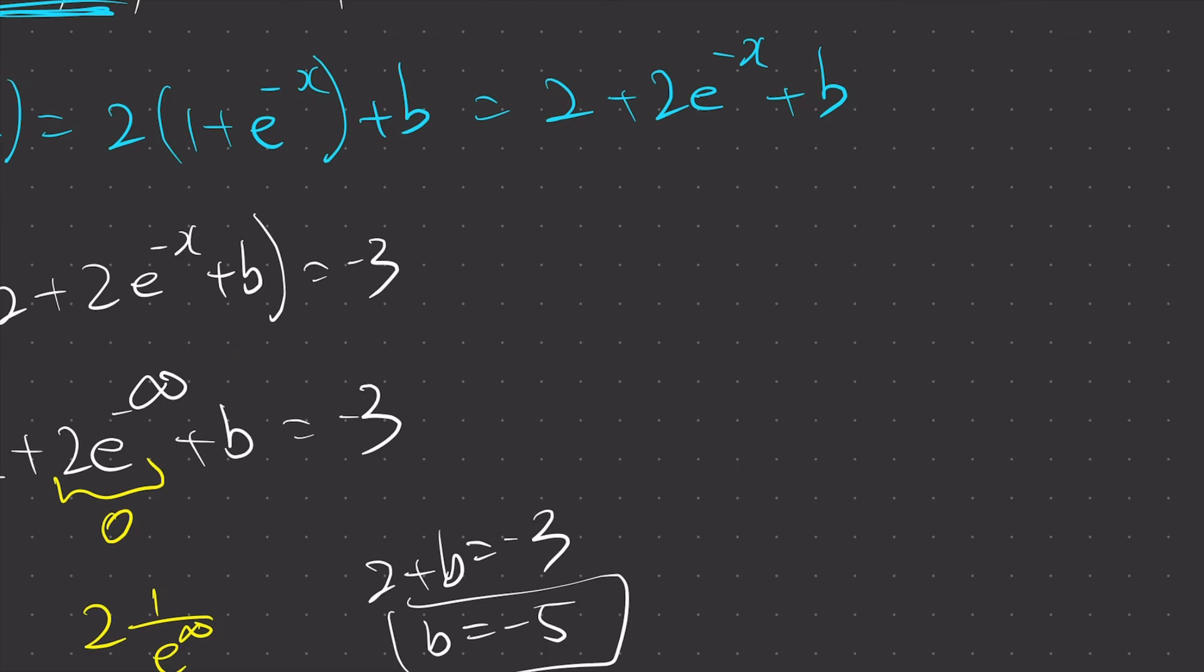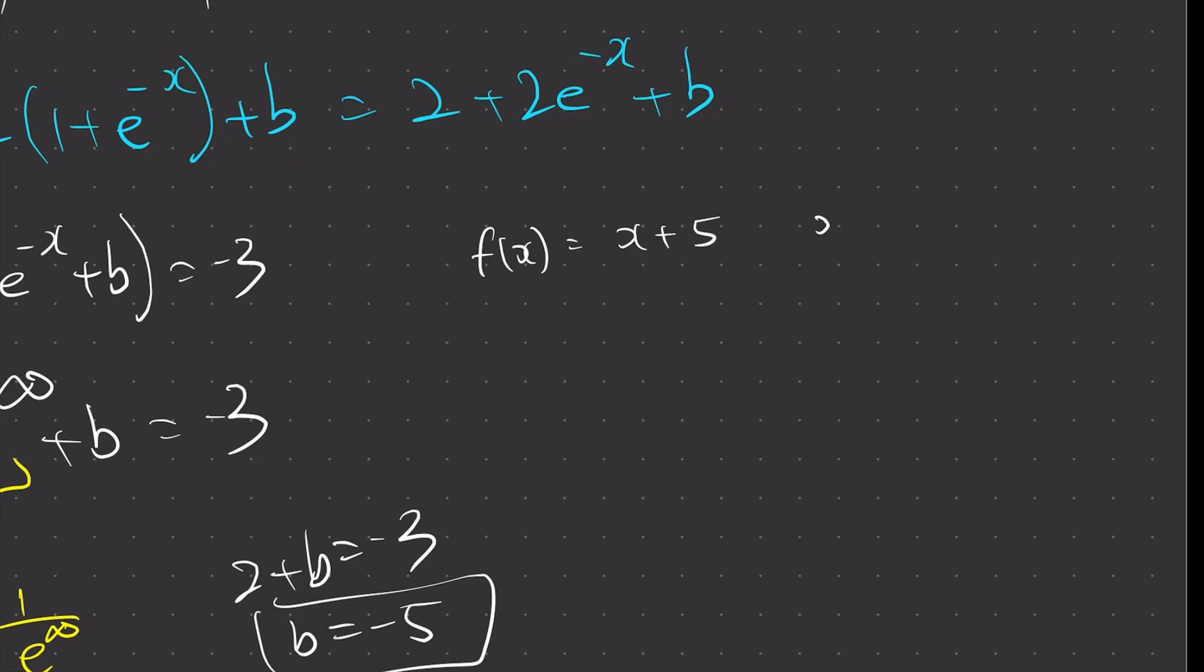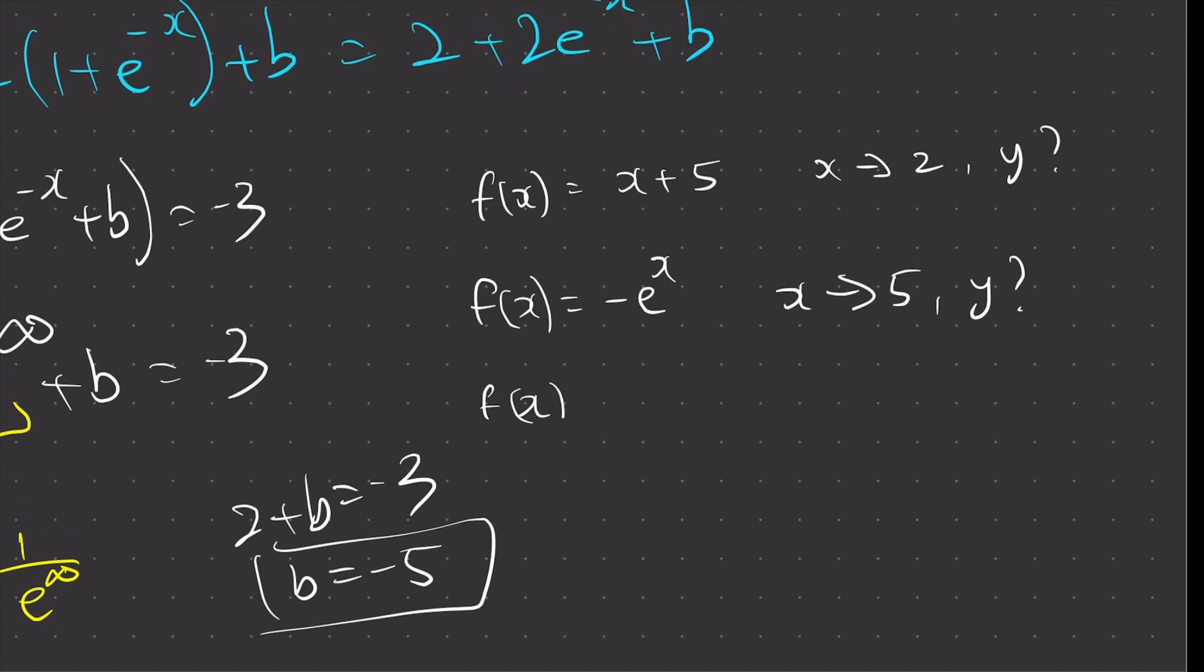So for homework or for practice, I'll give you a few more questions. You can practice by yourself. Let's say f(x) equals x plus 5. And I want to find the limit when x approaches 2, what is y? So this is one question you can do. Very simple. Now, another simple question could be f(x) equals negative e^x. And if x approaches 5, what is y approaching? One last one. Let's say f(x) equals log 3x. And as x approaches 7, what does y equal to? So here are three questions you can practice. If you have any questions, you can put it in the comments below. And your answers, feel free to put it in the comments below as well. And I'll have the answers for you in the description below.